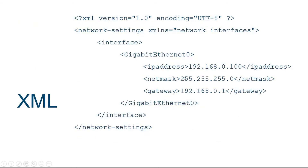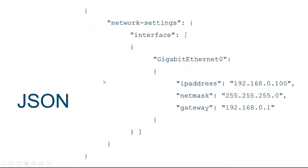Let's look at how the data is organized. In XML, you have data objects with the key 'ip address' and the value '192.168.0.100', making it a key-value data object. The net mask and the gateway are also key-value data objects. These three objects are part of the gigabit ethernet zero object, which is part of the interface object. A similar structure is seen in JSON, where ip address, net mask, and gateway are part of the gigabit ethernet zero object, which is part of the interface and network settings.